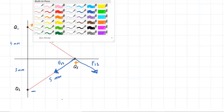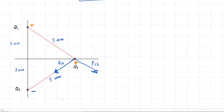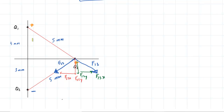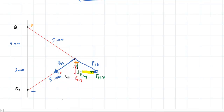As before, we need to consider the components of these forces. For F2,3, there is a Y component — F2,3,y — and an X component — F2,3,x. Similarly for F1,3, there is a Y component pointing downward — F1,3,y — and an X component pointing to the right — F1,3,x. Here's the key: Q1 and Q2 have the same magnitude of 80 nanocoulombs, and the distance to Q3 is 5 millimeters for each. So the X components are identical in magnitude but point in opposite directions and will cancel.